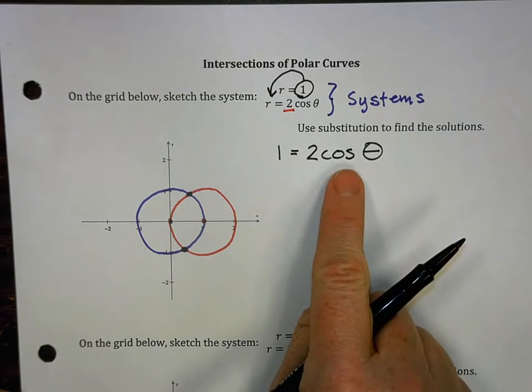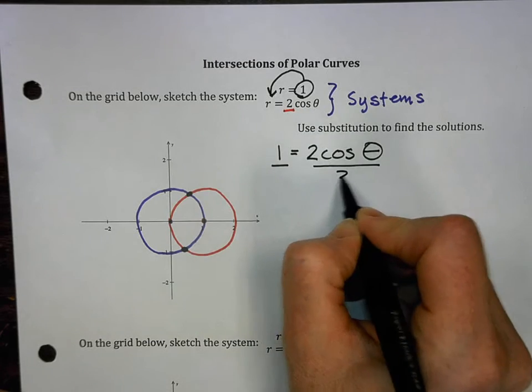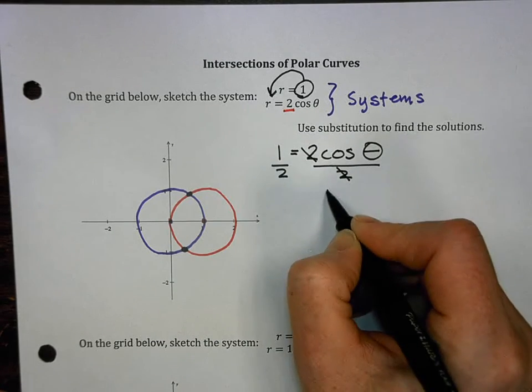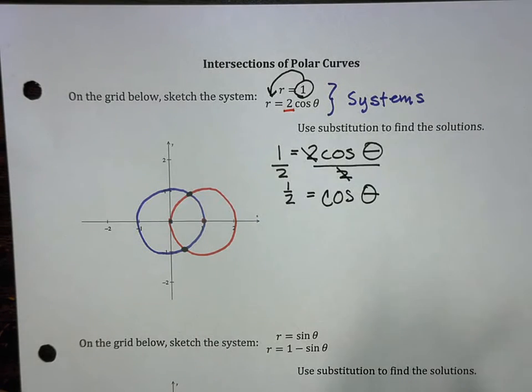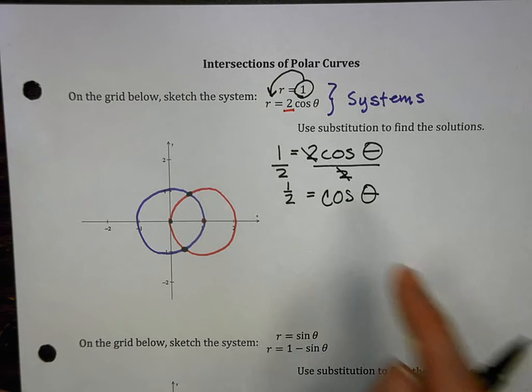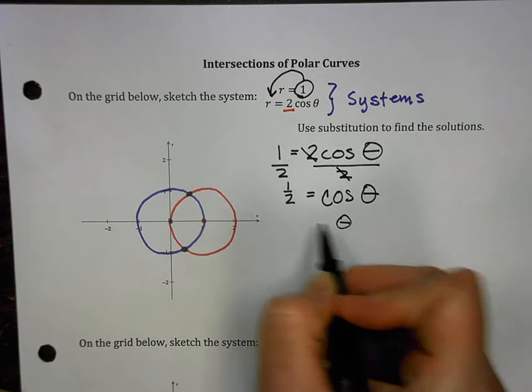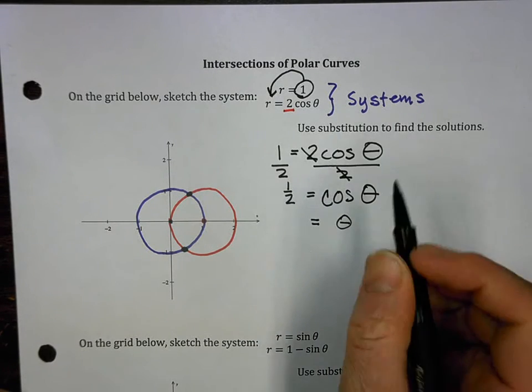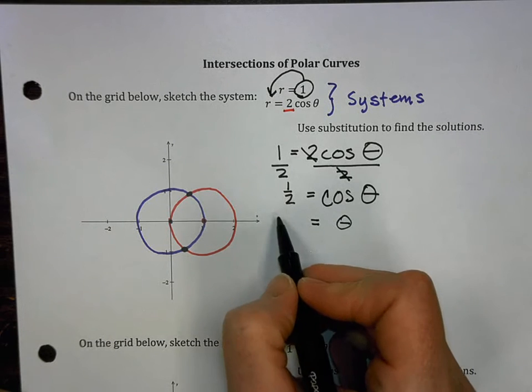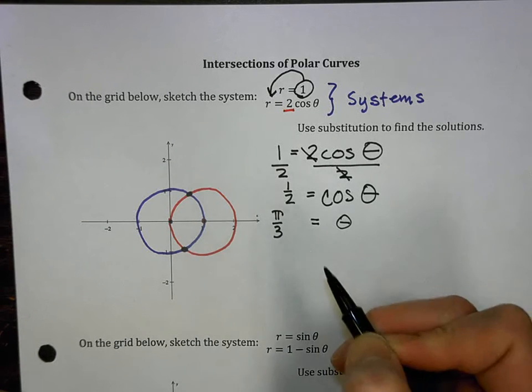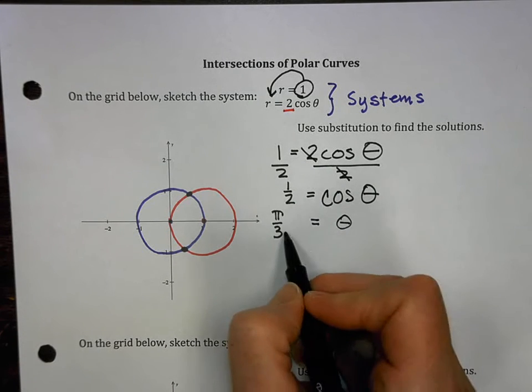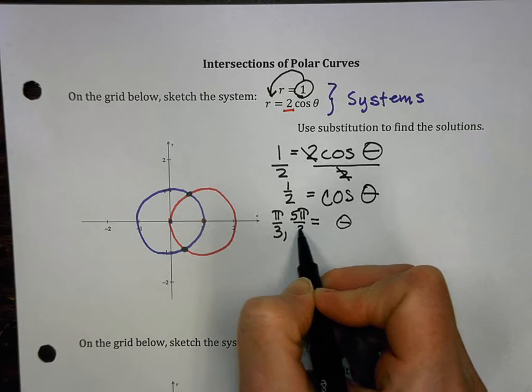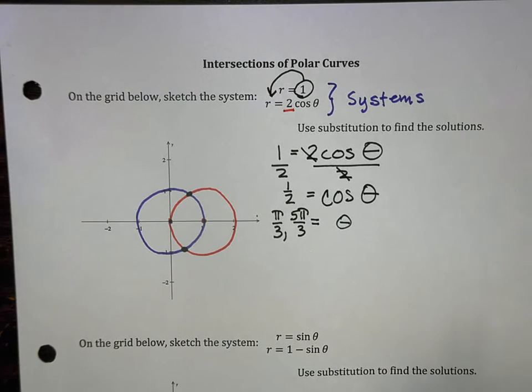One equals two cosine theta. I need to get cosine theta by itself. So I'm going to divide both sides by two. And I get cosine theta equals one half. We're in familiar territory. For what angle does the cosine equal one half? Theta equals the cosine, that would be pi over three, and also cosine is positive one half at five pi over three. So there we found our theta.